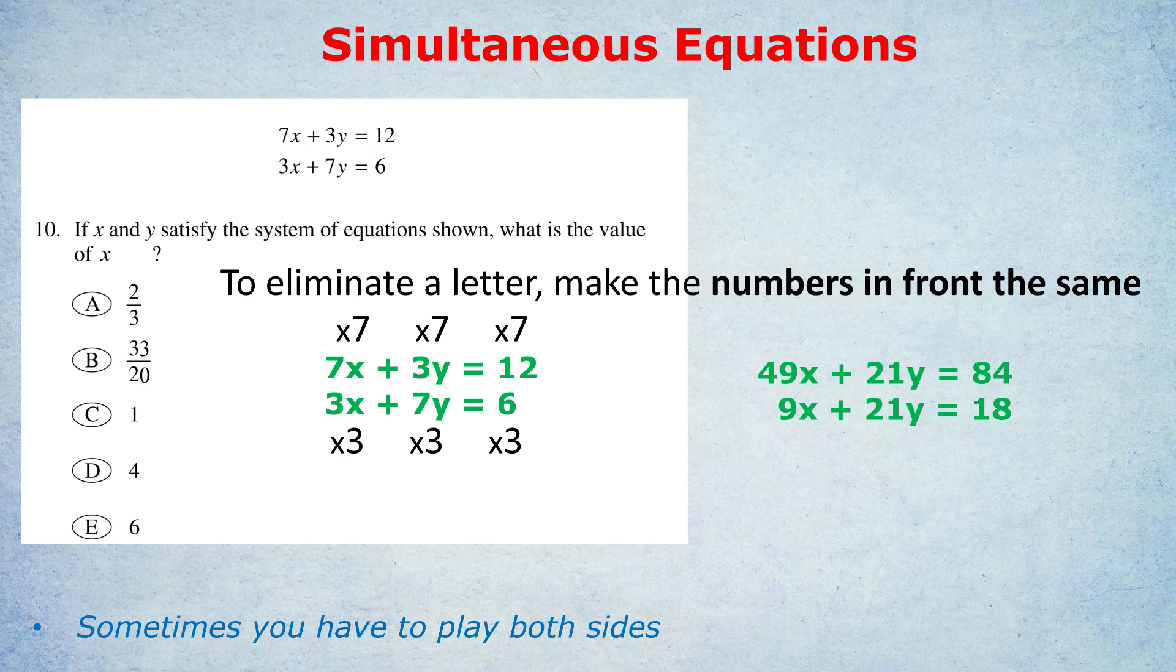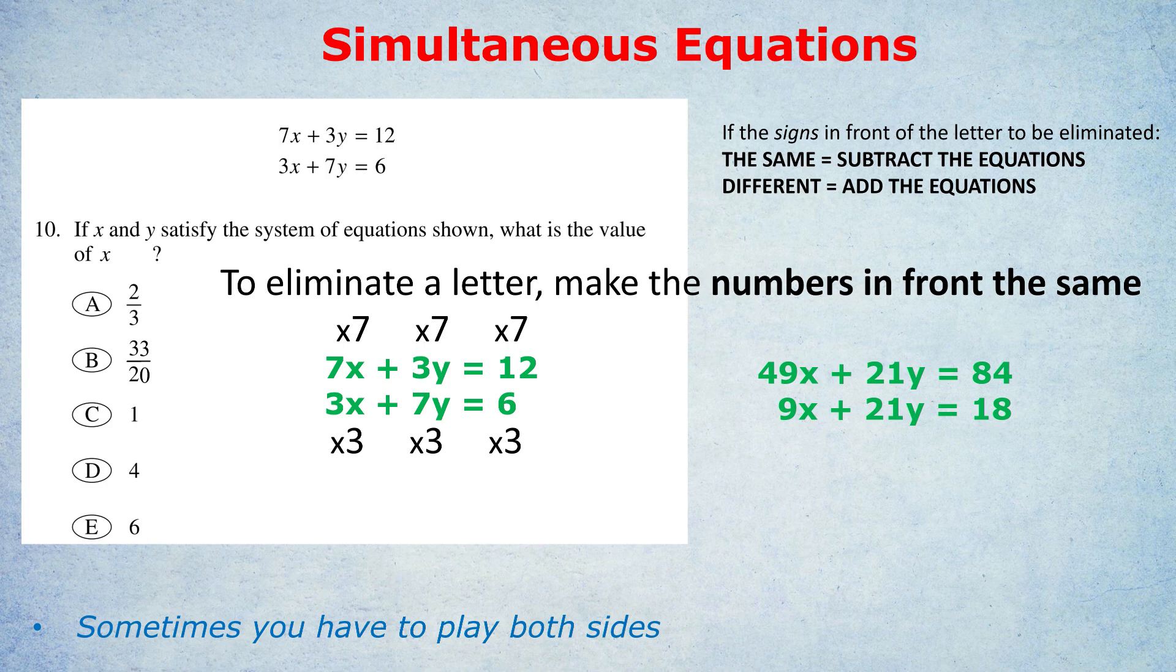Now what do we have to do? Well, the signs in front of the letters we're going to eliminate are the same. We have plus 21y and plus 21y. And when the signs are the same, what do we do? We subtract the equations. Because otherwise, if we added the two equations, the y wouldn't be eliminated. You get 42y. So it makes sense that when the signs are the same, you have to subtract the equations. That first equation, subtract the second equation, gives us 40x equals 66. Divide both sides by 40. 66 over 40, which is 33 over 20, to answer b. And that is, again, the essence of the elimination method.